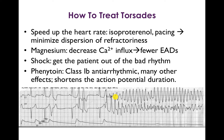Now you can understand a little bit about how to treat Torsades. Again, this isn't information you're going to be responsible for on the exam, but it may be helpful clinically. Interventions that speed up the heart rate decrease the QT interval — drugs like isoproterenol or transvenous cardiac pacing. By decreasing the QT interval, you minimize the dispersion of refractoriness. A drug like magnesium actually decreases calcium influx, which leads to fewer early after depolarizations. Shock is useful to get the patient out of the bad rhythm. And phenytoin is a class IB antiarrhythmic — one of its effects is to shorten the action potential duration, again attacking the fundamental problem of a prolonged QT interval.